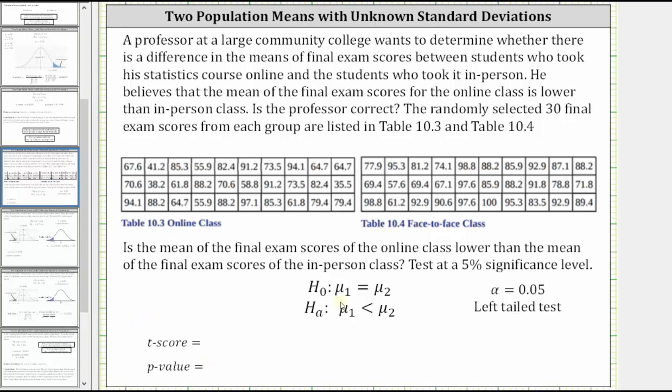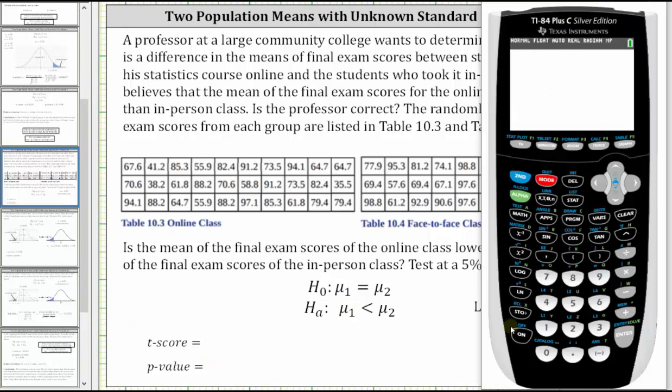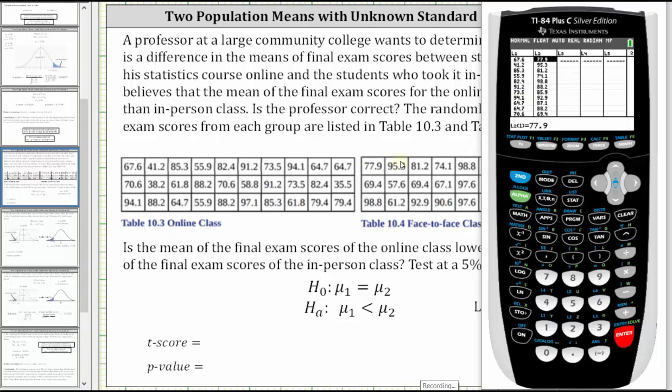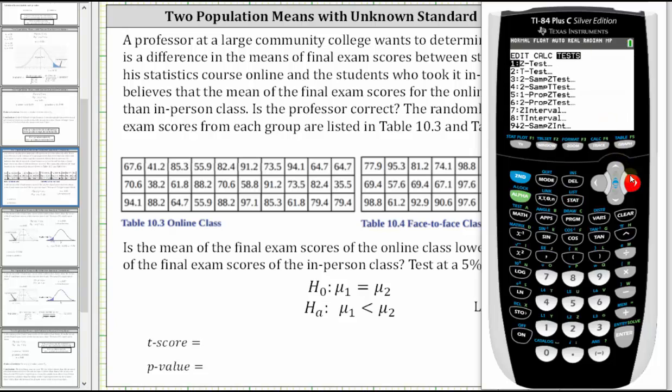Going to the calculator, I've already entered the data to save time. To enter data, press stat, enter. I have the online final exam scores in L1, and I have the in-person or face-to-face class final exam scores in L2. Next we press stat, right arrow to tests, and we select option four, two-sample t-test. I've already entered the key information, but let's review it.